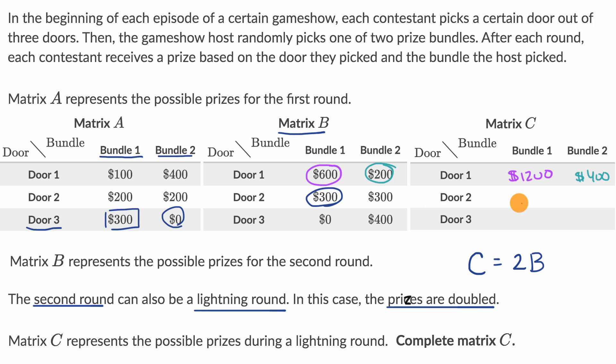Instead of $300 here, multiply that by two, you're going to get $600. Instead of $300 here, you're going to get $600. We're almost there.